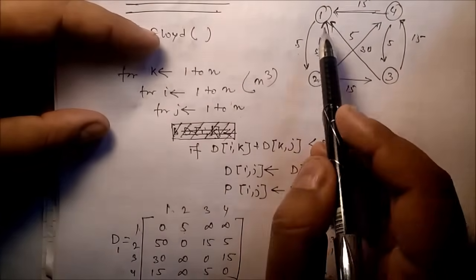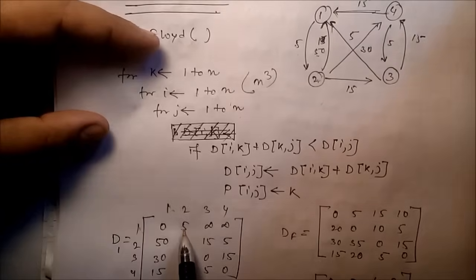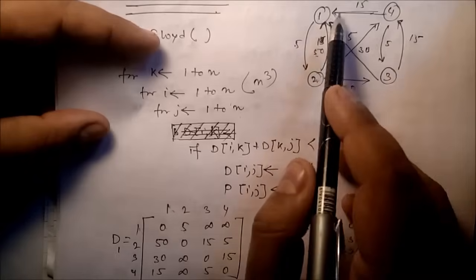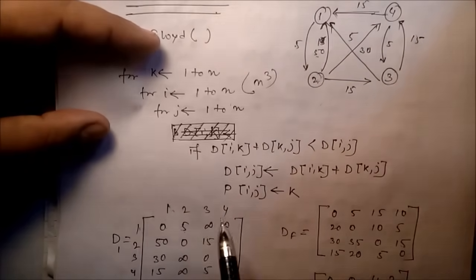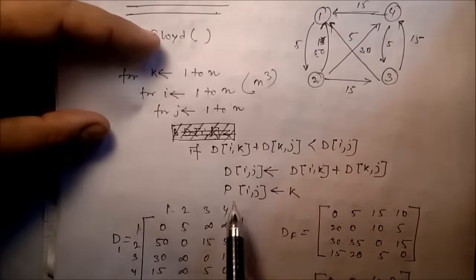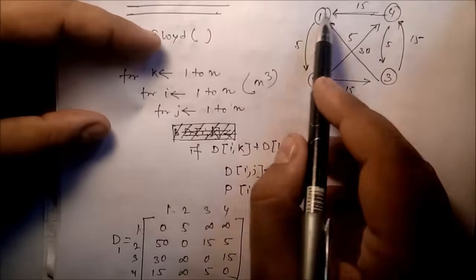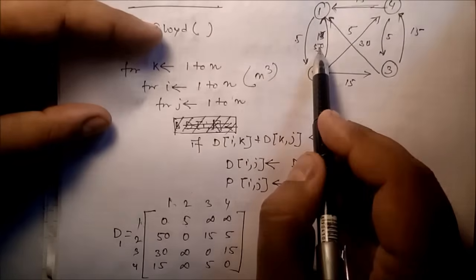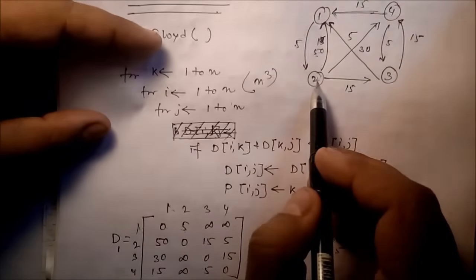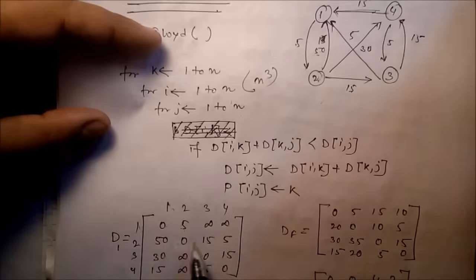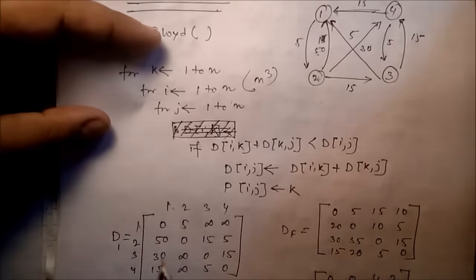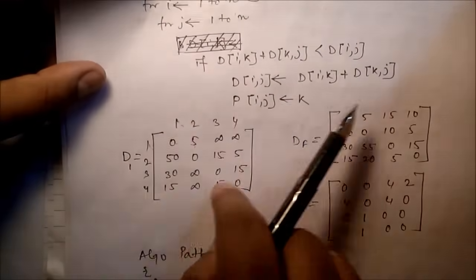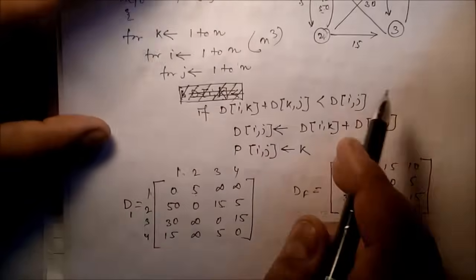In the initial D matrix: D[1][2] is 5, D[1][3] is infinite because there is no direct path, D[1][4] is infinite because there is no direct path from 1 to 4. D[2][1] is 50, D[2][2] is 0, D[2][3] is 15, and D[2][4] is 5.